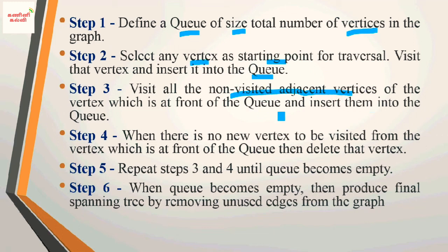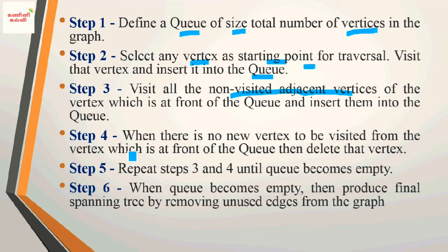Third, take the vertex at the front of the queue and visit all its non-visited adjacent vertices, inserting them into the queue. Repeat this process. When the queue becomes empty, you will get the BFS traversal order. Finally, produce a spanning tree by removing unused edges from the graph.